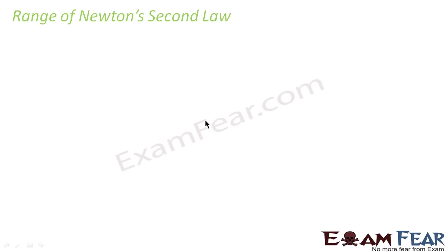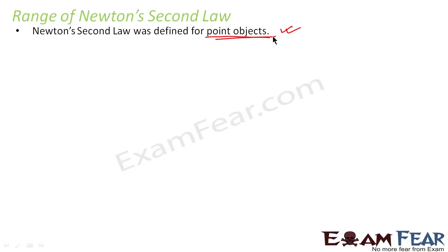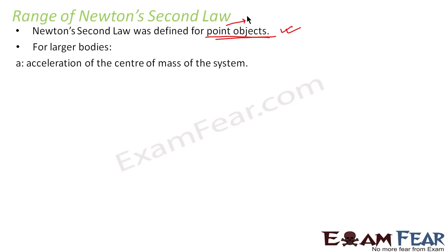Newton's second law was initially defined only for point objects — objects whose dimensions are almost equal to zero. However, it was later found that Newton's second law can be applied to larger bodies as well. When applied to larger bodies, acceleration refers to the acceleration of the center of mass of the system.